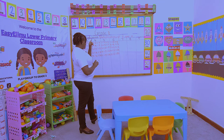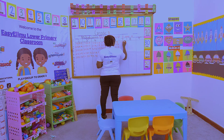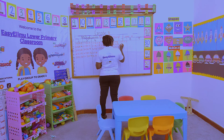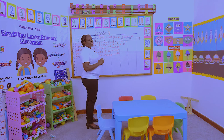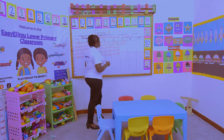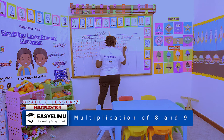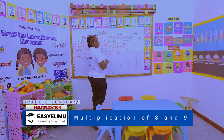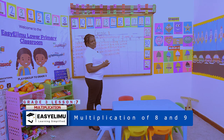Moving on to the multiplication table of 7. 1 × 7 = 7 — any number times 1 is that number. 2 × 7 is 7 + 7 = 14. 3 × 7 is 14 + 7 = 21.